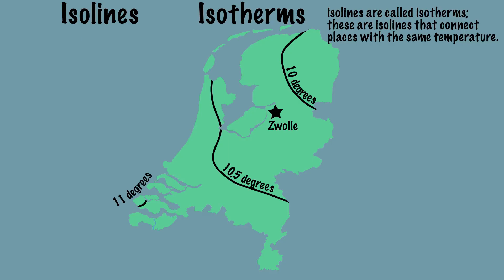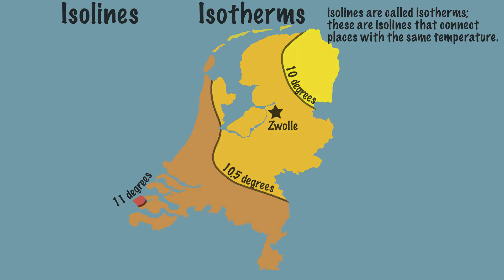Parts where it is colder than 10 degrees, parts where it is between 10 and 10.5 degrees, parts where it is between 10.5 and 11 degrees, and parts where it is warmer than 11 degrees. By working with isotherms it is therefore easy to see where boundaries of a certain annual average temperature are.